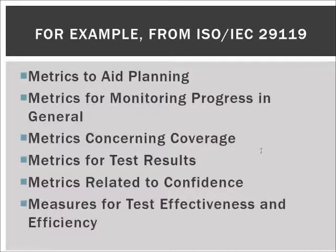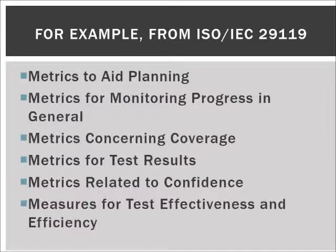The different metric classifications are: metrics that aid planning, metrics for monitoring progress in general, metrics concerning coverage, metrics for test results, metrics related to confidence, and measurements for test effectiveness and efficiency. The last one — test effectiveness and efficiency — is about the coverage and the amount of test cases against the amount of found errors, or the percentage of found errors based on fault seeding information or test case coverage.